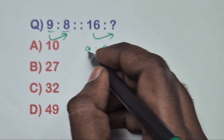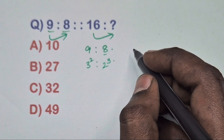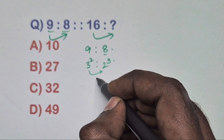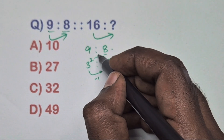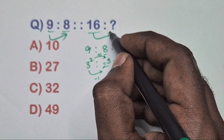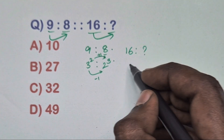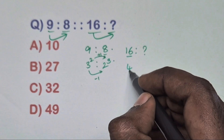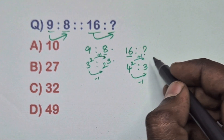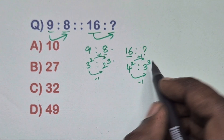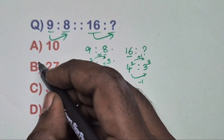Take 9 and 8: 9 is 3 squared and 8 is 2 cubed. The base is decreasing by 1 and the exponent is increasing. Same way, take 16: write 16 as 4 squared, so the base decreases to 3 and exponent increases by 1, giving 3 cubed = 27. Option B is the correct answer.